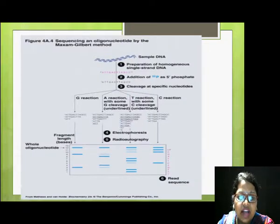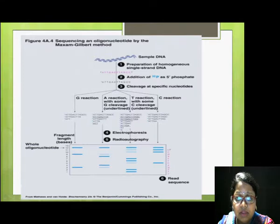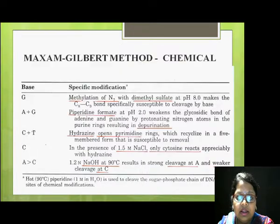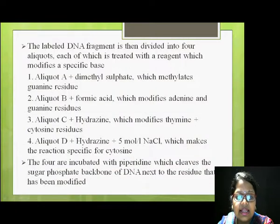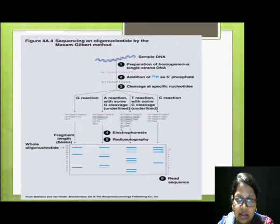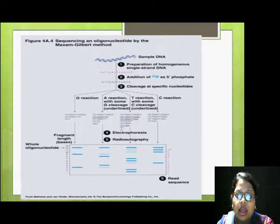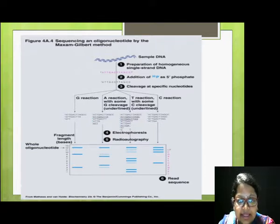Coming back to the figure: the first is the G reaction, where eliquot A contains dimethyl sulfate. The second eliquot uses formic acid, which modifies A and sometimes G also. In the third eliquot C, hydrazine modifies thymine and sometimes cytosine. In the fourth eliquot — the C reaction — cytosine residues are specifically modified using hydrazine and NaCl.